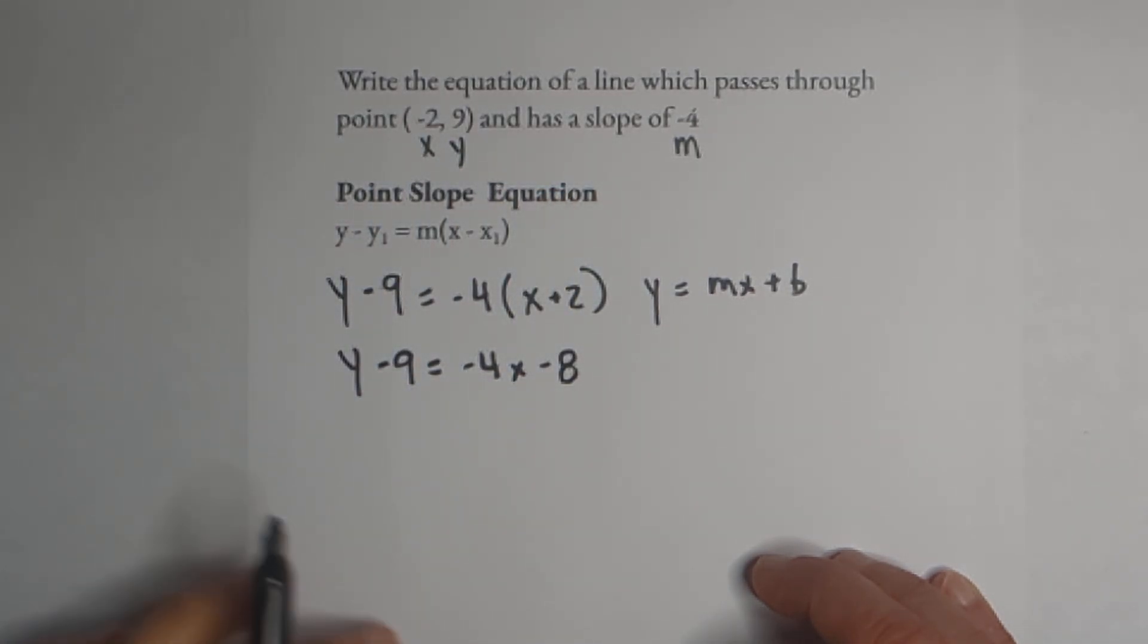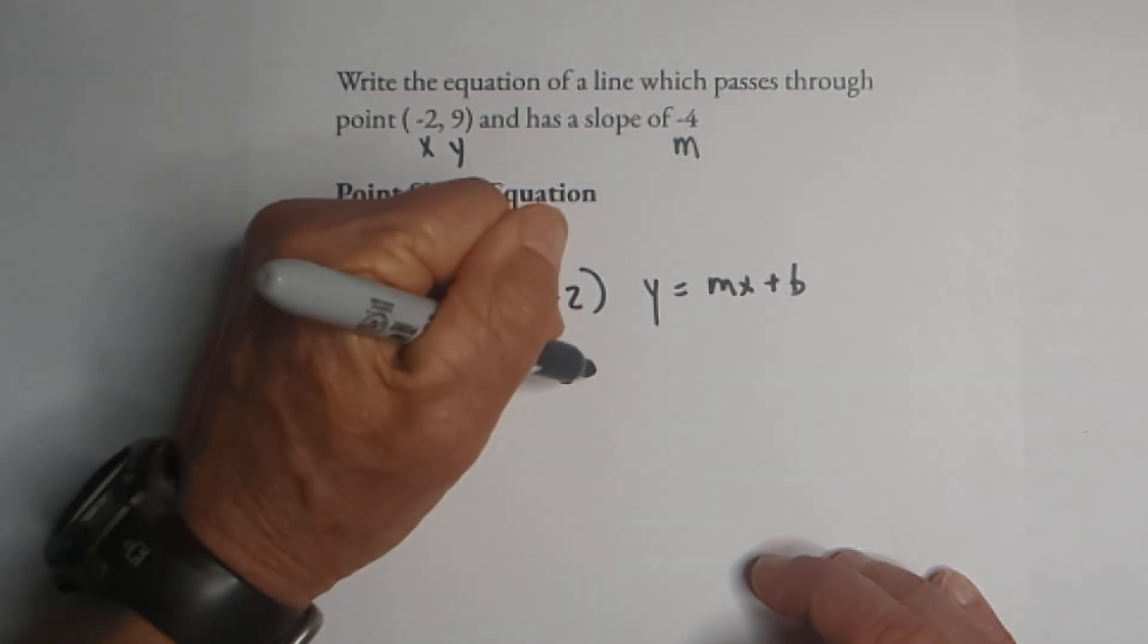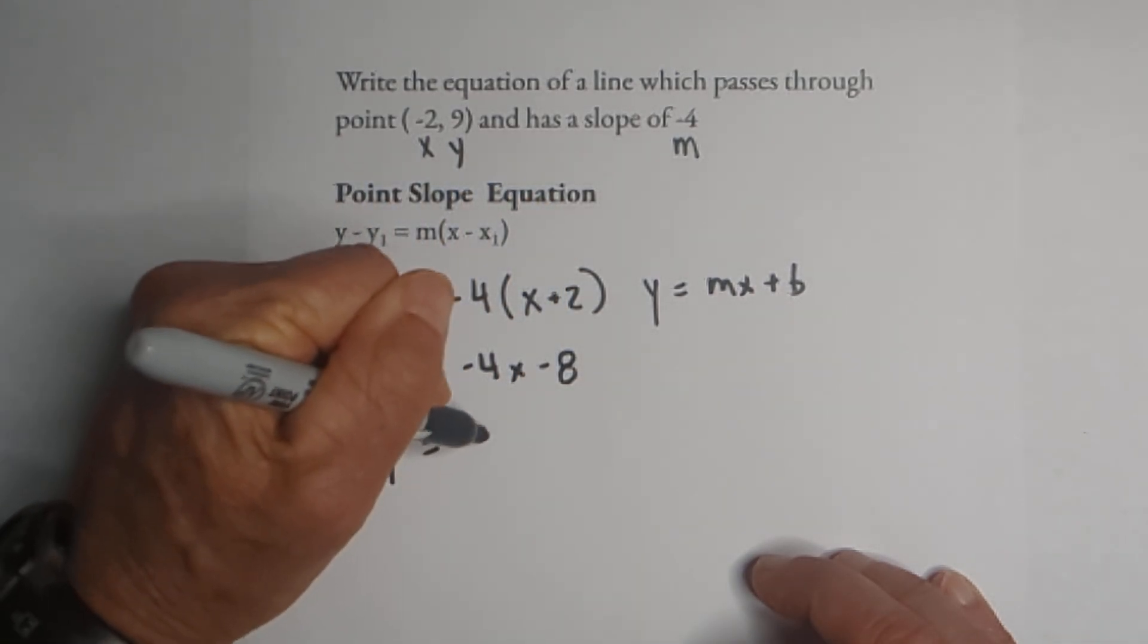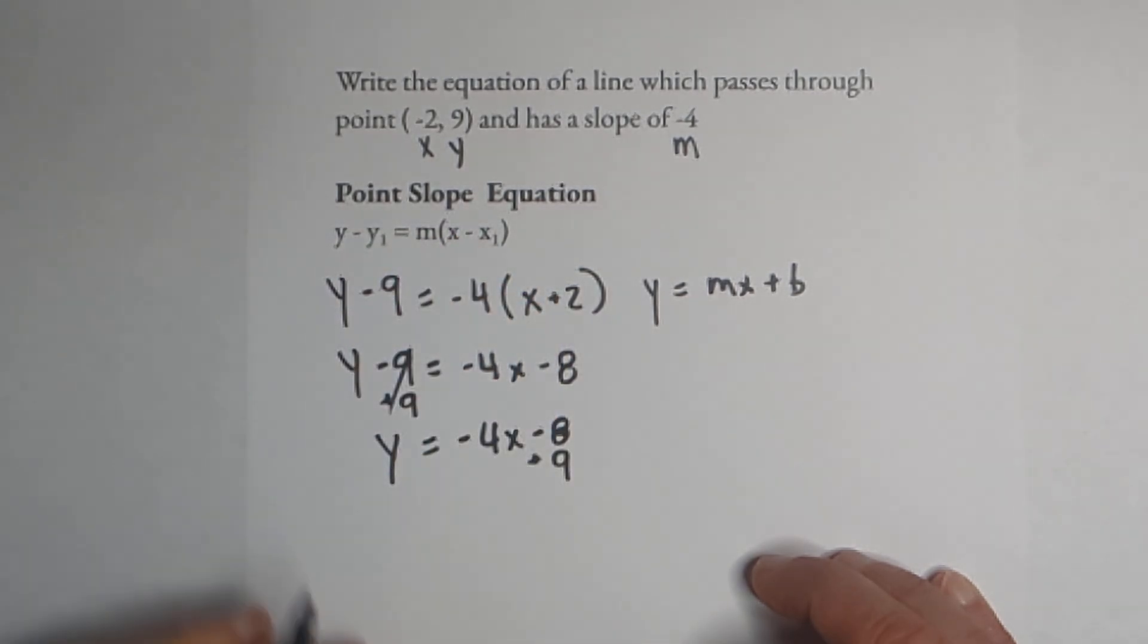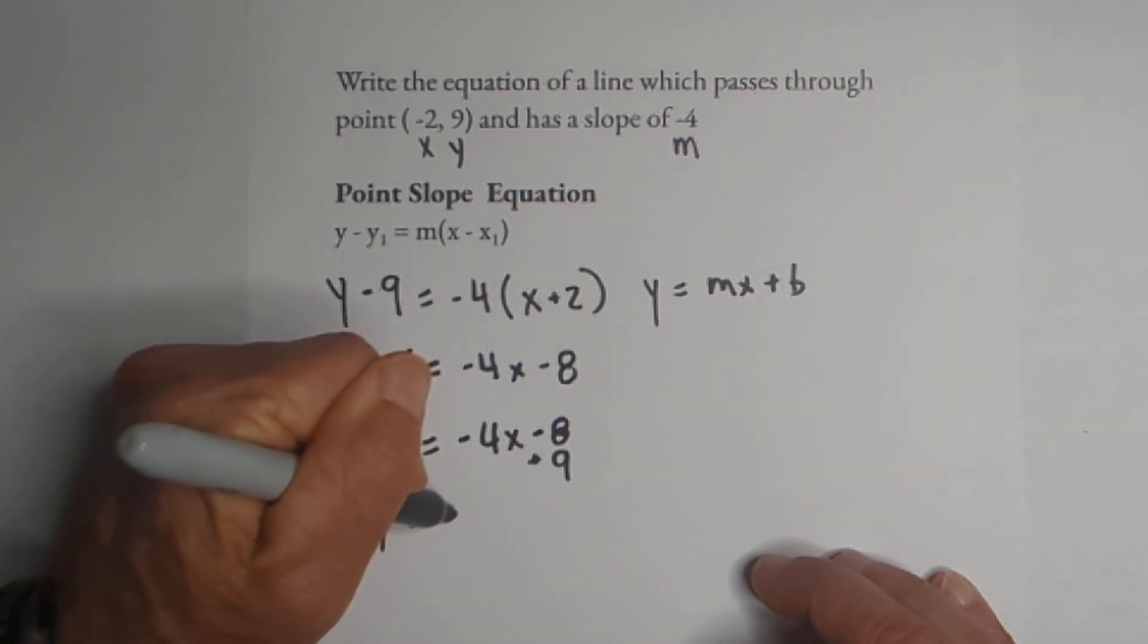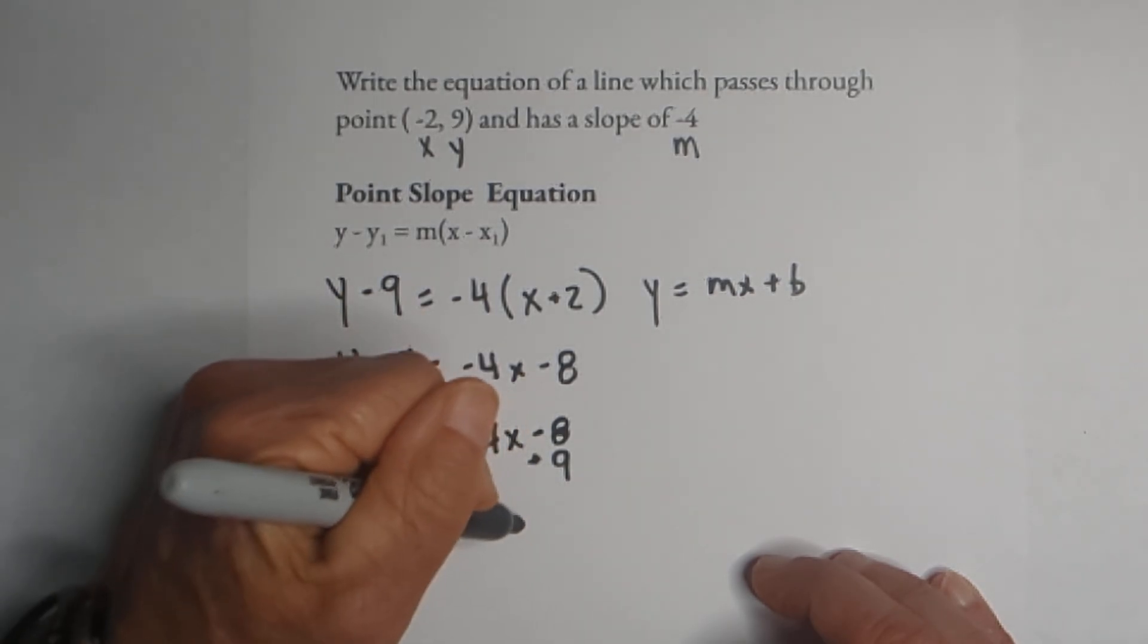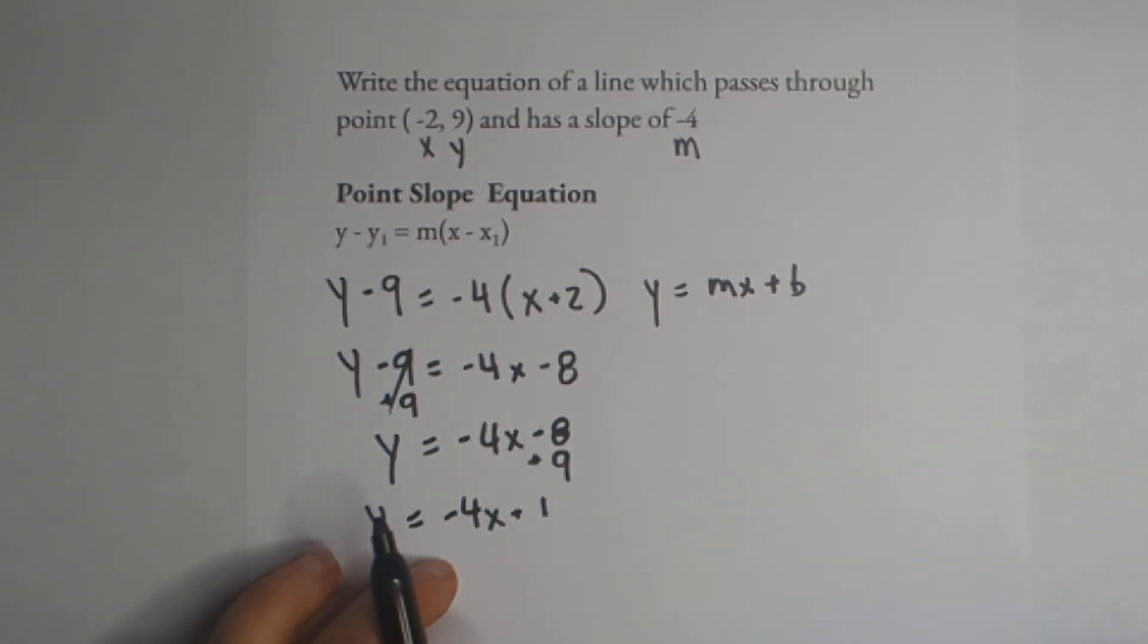We're close, but we're not there yet because we don't have y by itself. So let's add nine to both sides. These cancel. So y = -4x - 8 + 9, and we know that a positive nine and negative eight becomes positive one. So there it is in slope-intercept form.